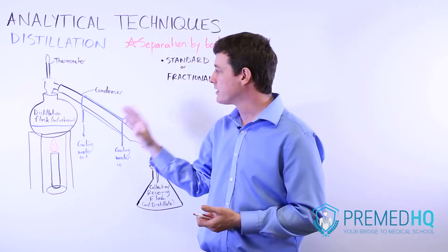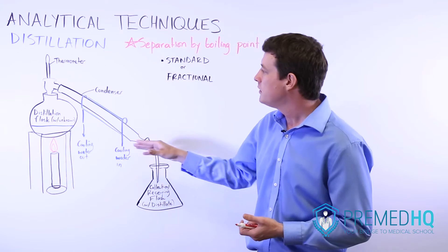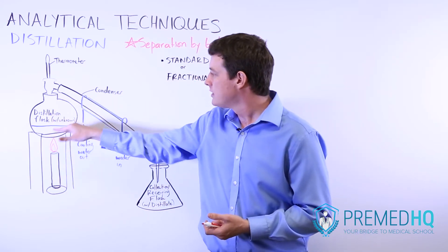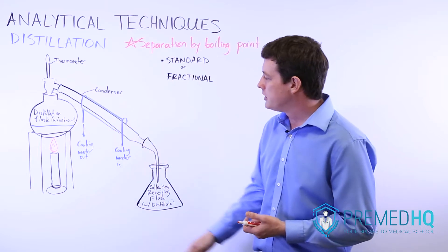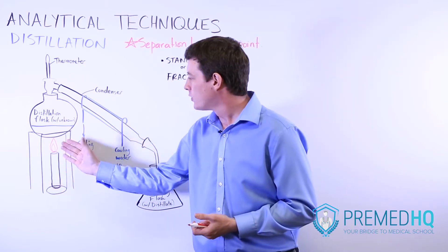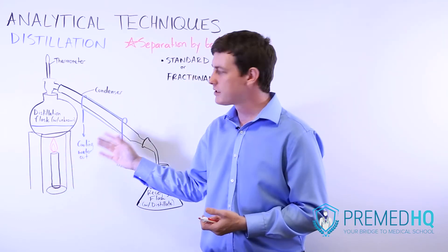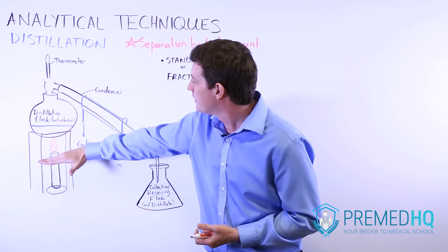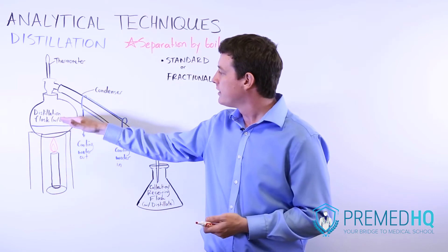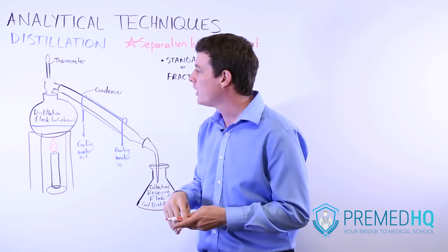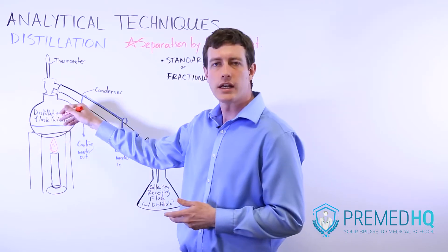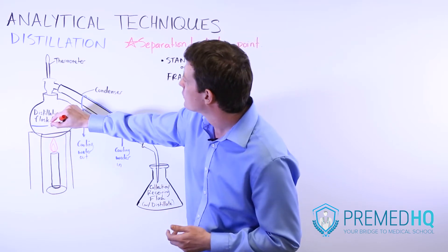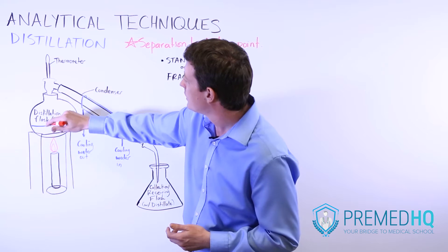With distillation it's a fairly simple setup. You have your unknown compound or mixture in a distillation flask and you heat it using a Bunsen burner or some heating plate. Eventually that energy will be enough to break the intermolecular forces keeping it in the liquid phase, and the components will rise up as they turn into vapor.